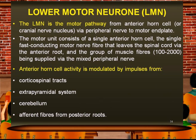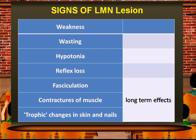In contrast to upper motor neuron lesions, lower motor neuron lesions involve the motor pathway from the anterior horn cells via the peripheral nerve to the motor end plates. The motor unit consists of a single anterior horn cell, a fast-conducting motor nerve fiber leaving via the anterior root, and the group of muscle fibers supplied via mixed peripheral nerves. Signs of lower motor neuron lesions include weakness, wasting, hypotonia, loss of reflexes, fasciculations, contractures, and trophic changes to skin and nails in the long term.